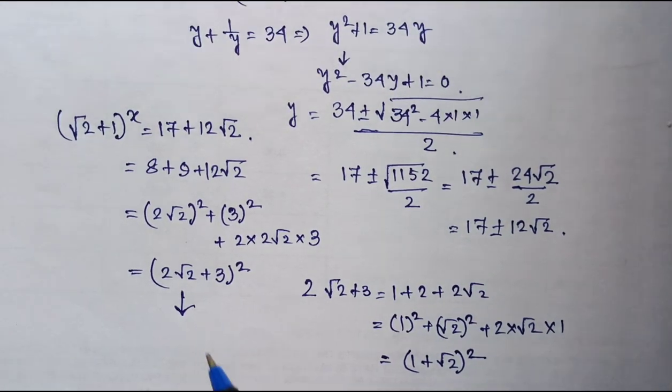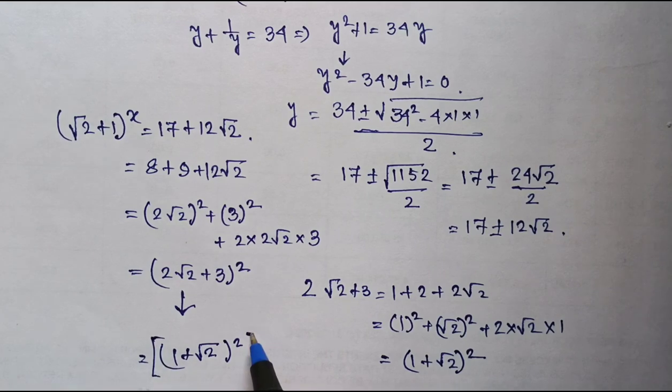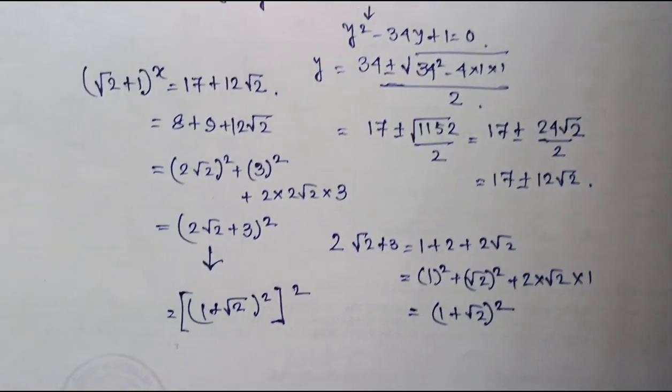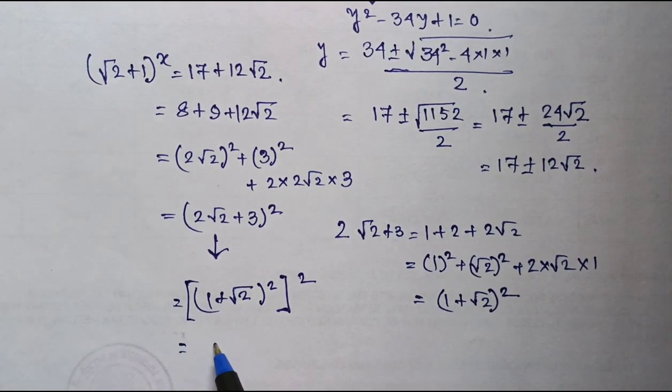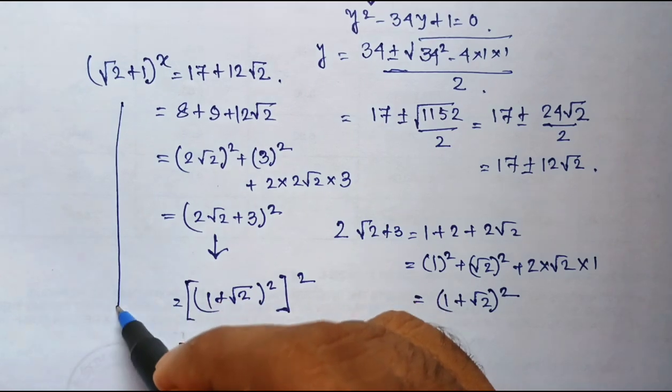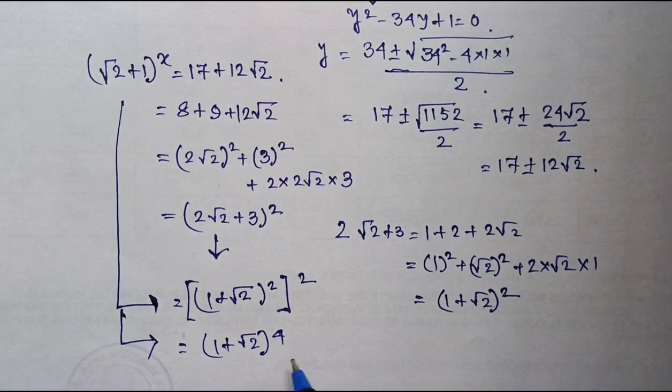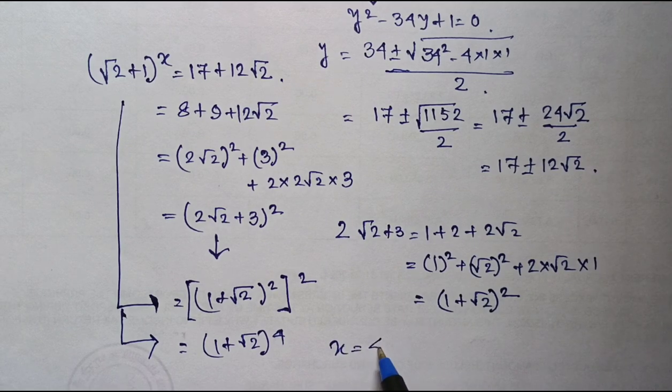So that means it is 1 plus root 2 whole to the power 4. What is that? That is 1 plus root 2 whole to the power x. So comparing the indices, x equal to 4 is my positive answer for x.